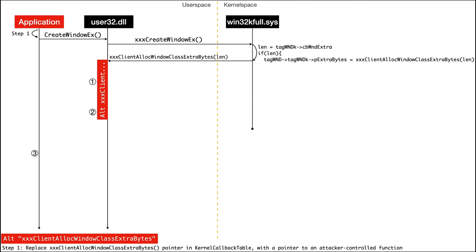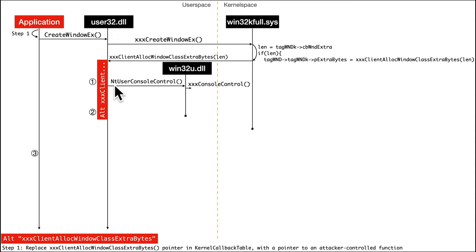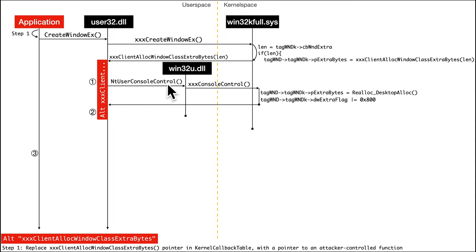Let's go seeking confusion. I gave you the sequence diagram and told you there should be some sequence of function calls that would lead to a type confusion. What is the sequence? First, the attacker would call NtUserConsoleControl, which calls into win32u, and that calls into kernel space xxxConsoleControl. Although there's extra code, the only relevant bit is what happens next.